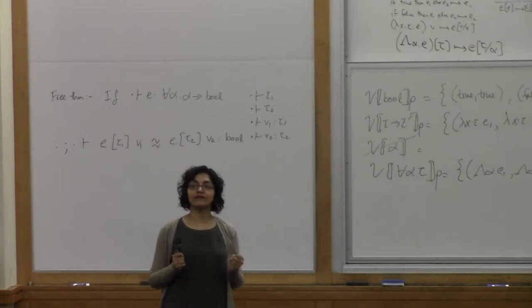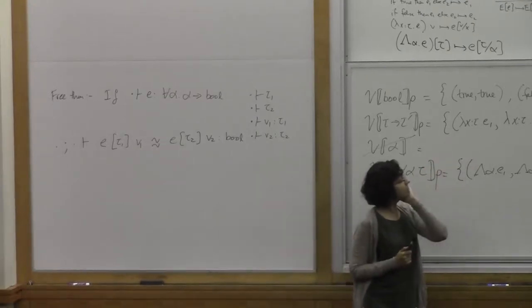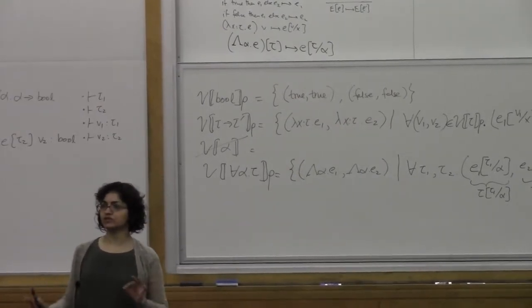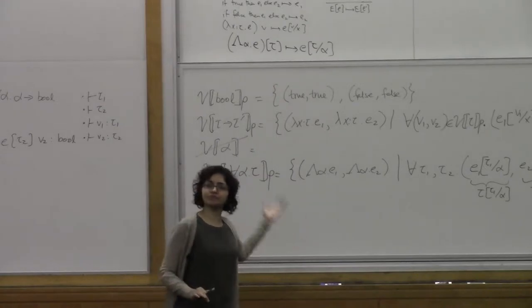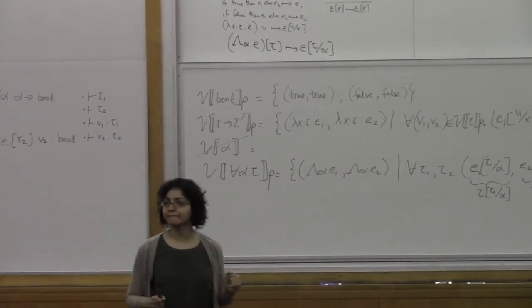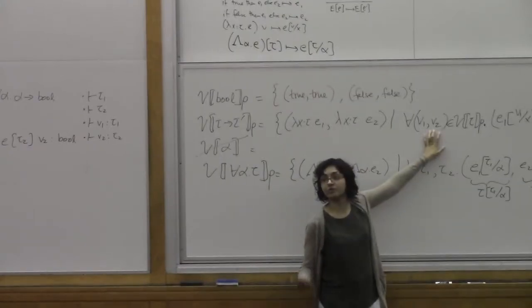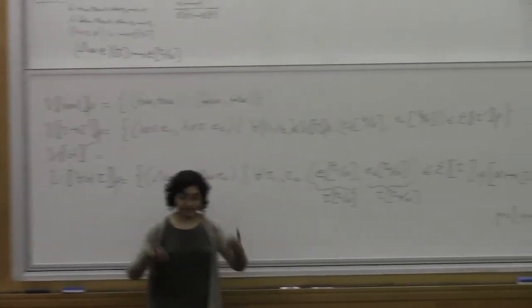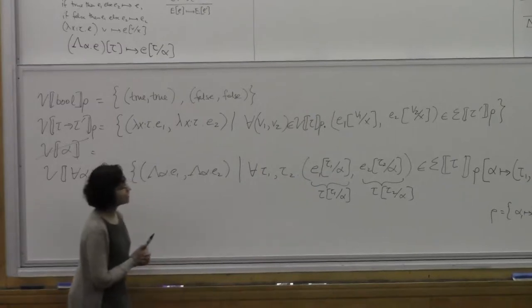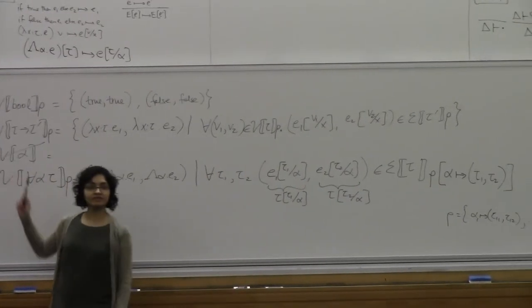Now we're interpreting types with free variables. When we get to the polymorphic type for all alpha tau, we pick two types and an arbitrary relation R on values of those types. In the case of types, we can say any two types are related — it's equivalent to saying types don't need to be related. That's different from values, where we care carefully about what values are related, because we want this notion of equivalence between terms.